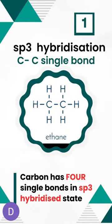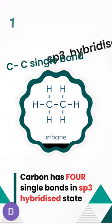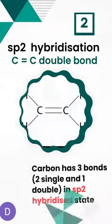Number 1: SP3 hybridization. Carbon-carbon single bonds are always SP3 hybridized. A carbon with four single bonds — each of them is SP3 hybridized.